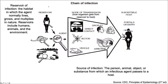The reservoir of an infectious agent is the habitat in which the agent normally lives, grows, and multiplies in nature. Reservoirs include humans, animals, and the environment. The reservoir may or may not be the same as the source from which an agent is transferred to a susceptible host. For example, the reservoir of coronavirus is bats, but the source of most human infections is other humans. Transmission can also occur through direct contact of humans with the reservoir.